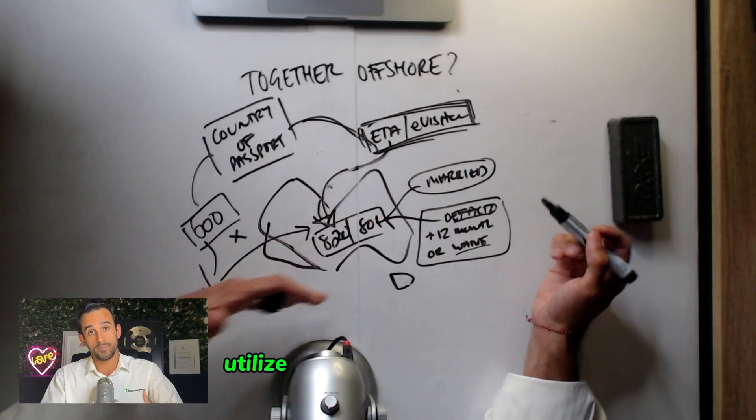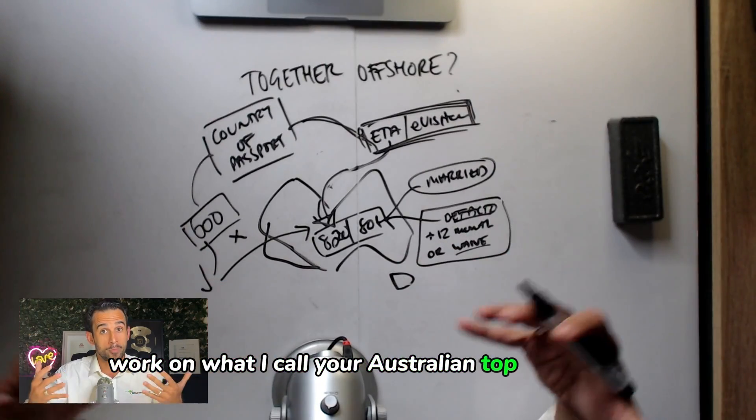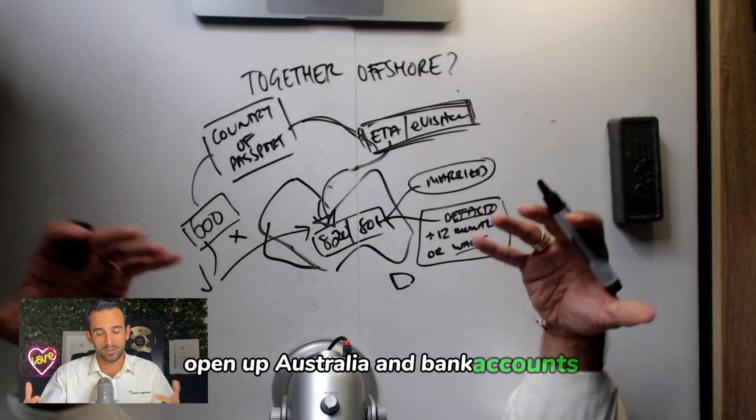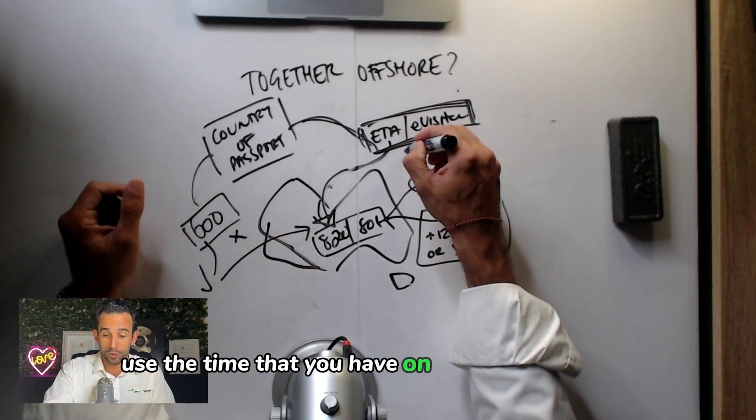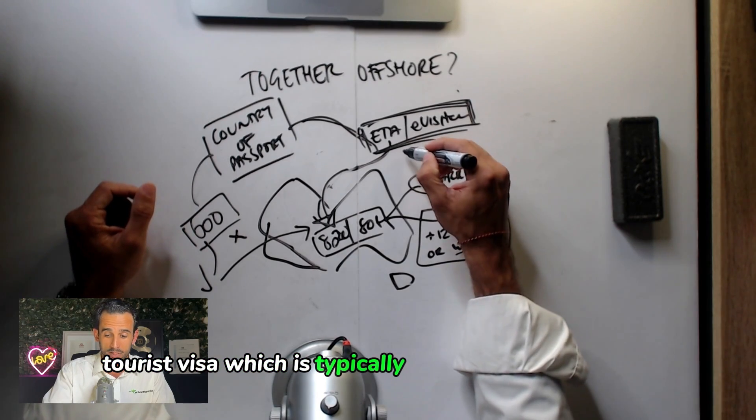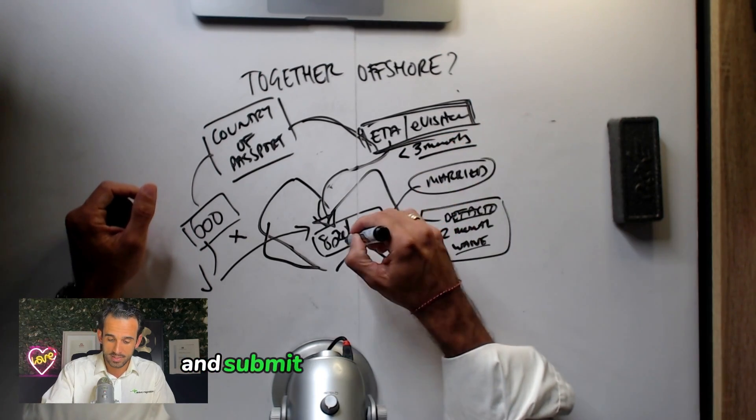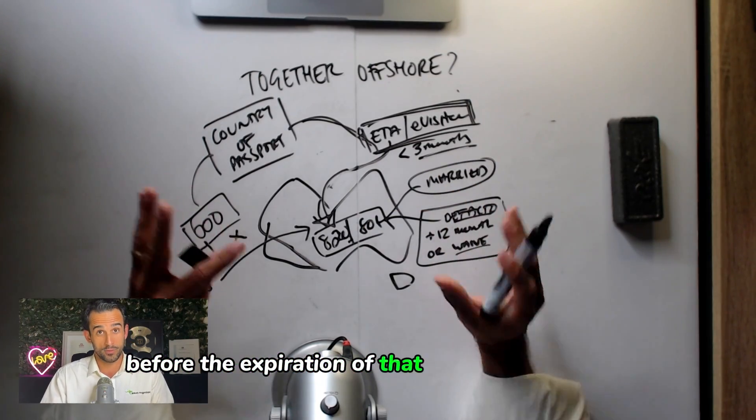Utilize the visa, come onshore, work on what I call your Australian top-up evidence, show that you've started to live together here in Australia, open up Australian joint bank accounts, start your life here in Australia. Use the time that you have on your multiple entry tourist visa, which is typically three months on your entry, and submit this onshore partner visa before the expiration of that three-month period.